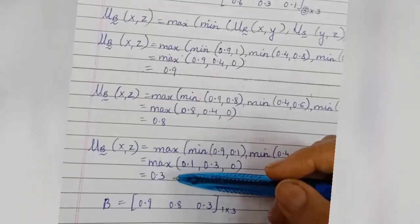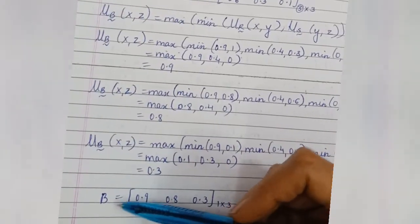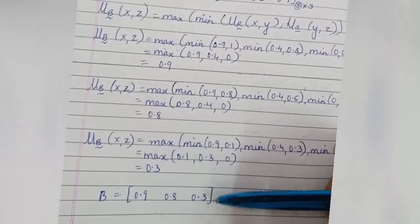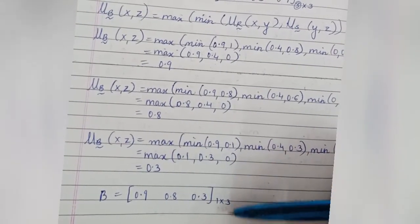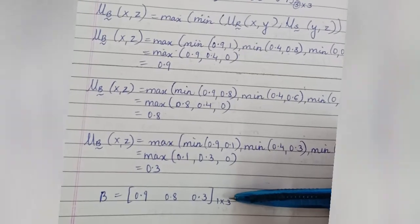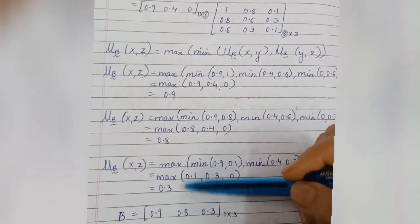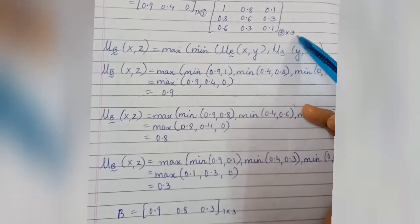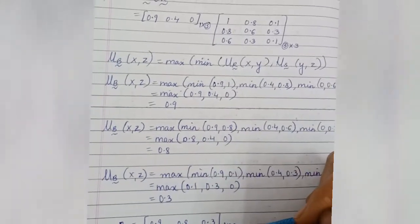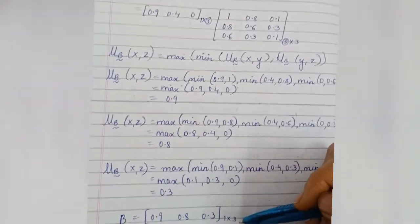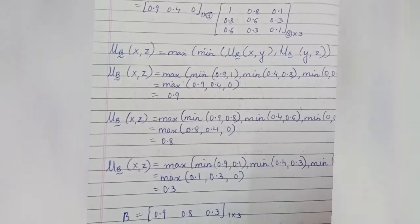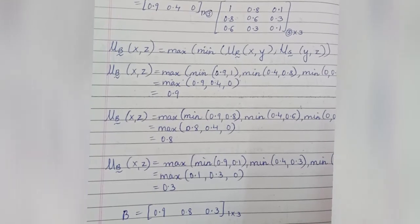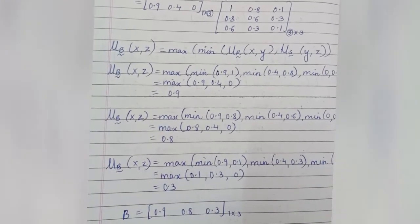Now write the result into matrix B: B = [0.9, 0.8, 0.3]. This is our final result matrix of size 1×3. We calculated the size as 1×3 before computing the elements, and the result confirms it. Do like, share, and subscribe to the channel and stay tuned for more videos. Thank you.